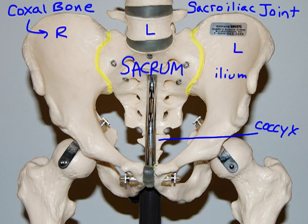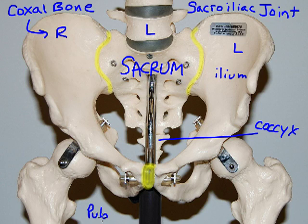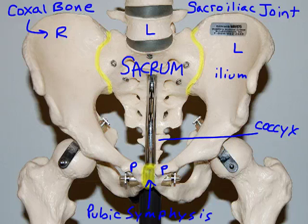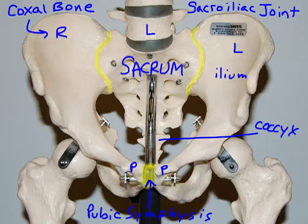Our second joint is found in the anterior region of the pelvic girdle, shown by this piece of rubber on the model — this is the pubic symphysis. This is the region where the two pubic bones are joining together. The most prominent pointed projection of the coxal bones — think P for point, pubic point out in front. The symphysis is a partially movable joint, similar to the sacroiliac joint, and made up of fibrocartilage.